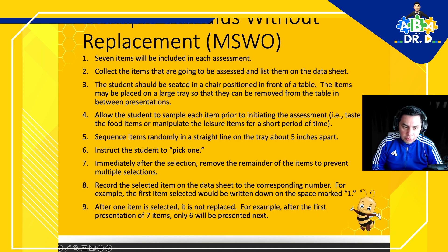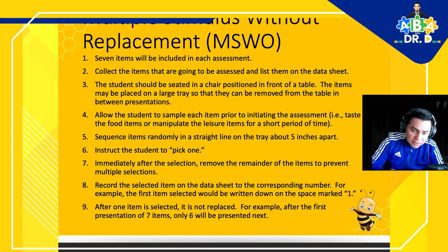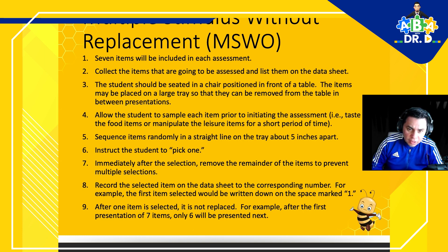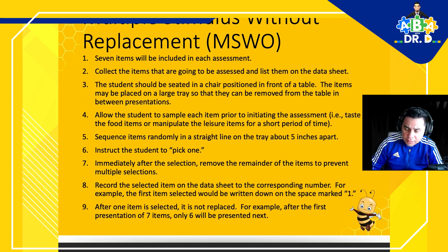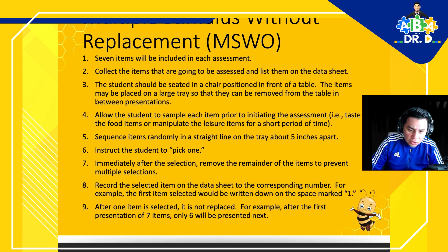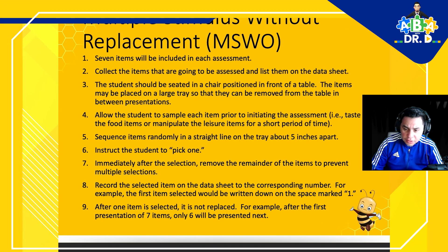Here are the steps for MSWO. Step one: seven items will be included in each assessment — though it can be three or more to qualify as MSWO. Collect the items to be assessed and list them on the data sheet. The student should be seated in a chair in front of a table. The items may be placed on a large tray so they can be removed from the table between presentations.